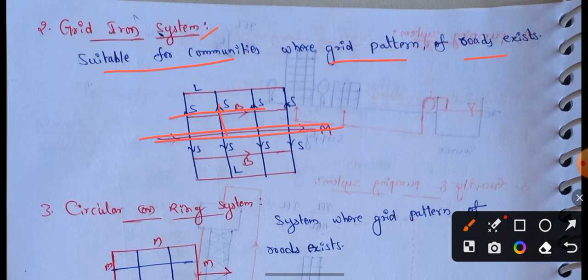Advantages of the grid-iron system: water reaches from different directions, so the size of pipes gets reduced. Also, only a small area gets affected in case of repairs, since the grid is small the effect is limited to a small area.